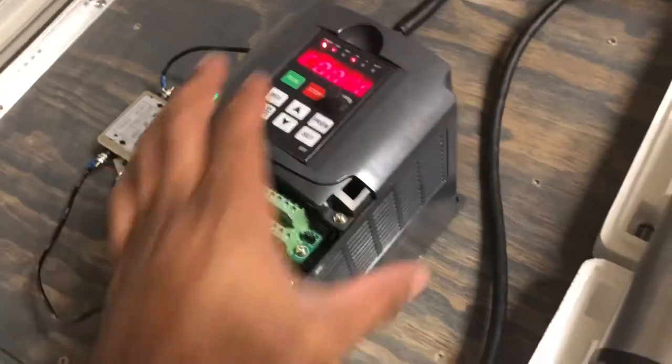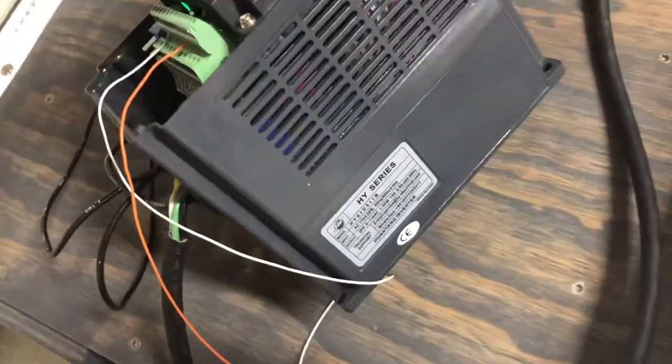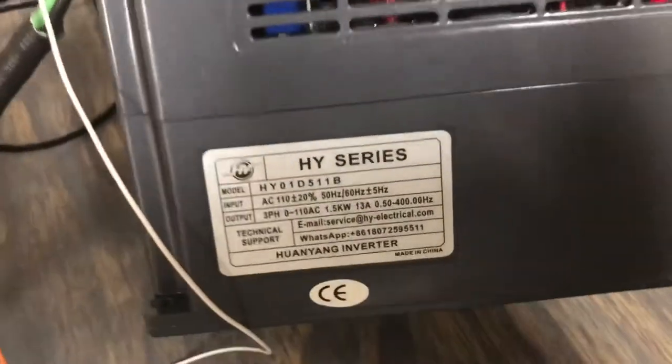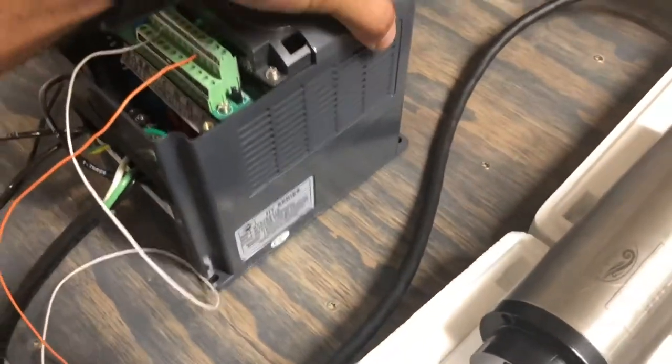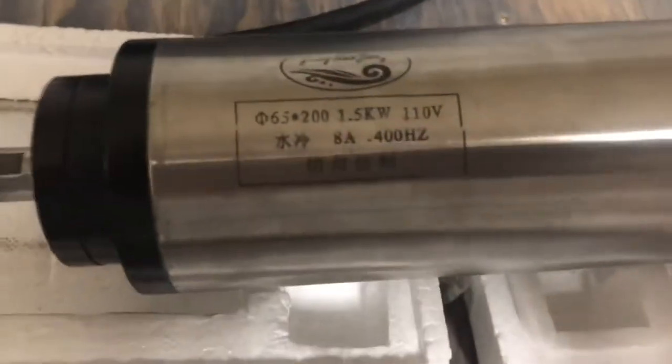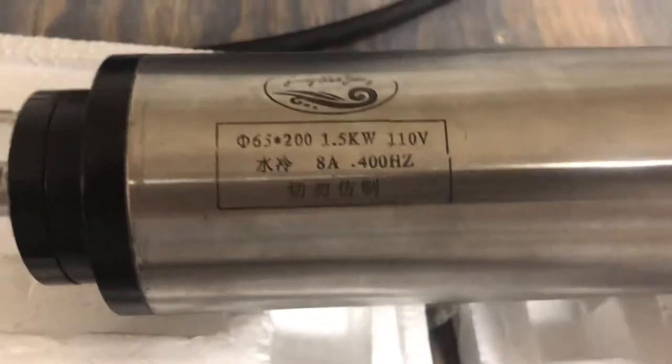Alright, let's take a look at here. This is the inverter. I did make sure that this only turns on when the CNC system's running. This is the 110 AC instead of the 220, and here is the spindle, 110 volt spindle.